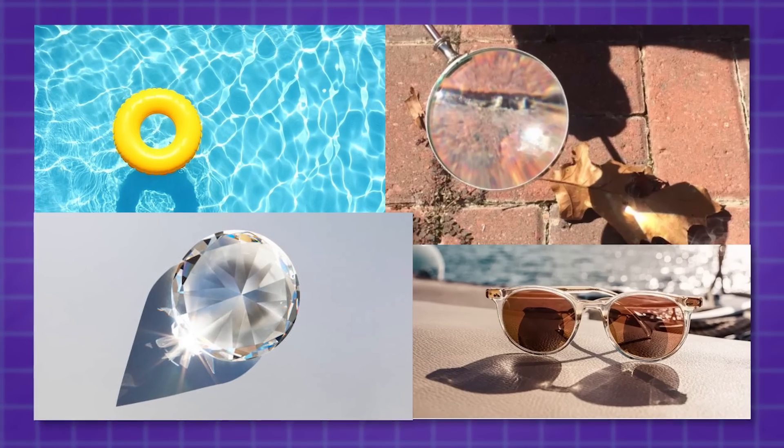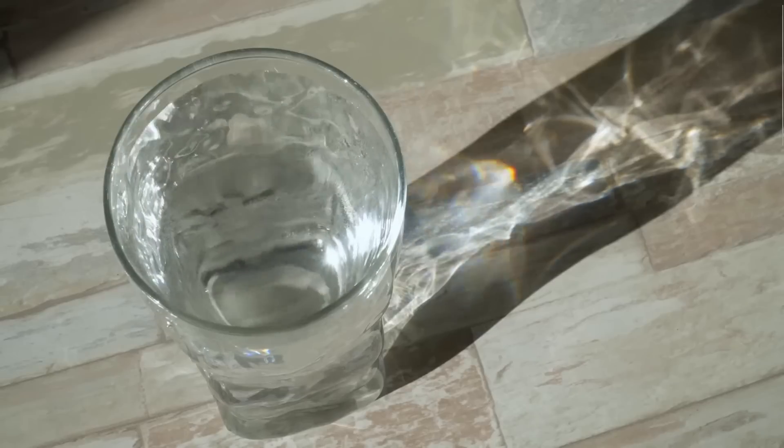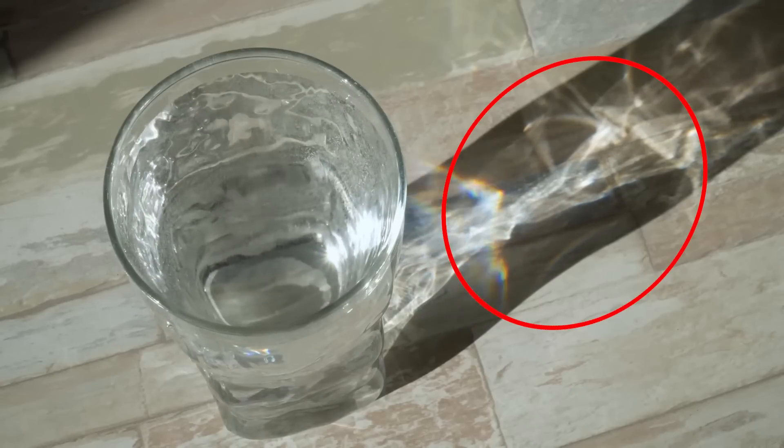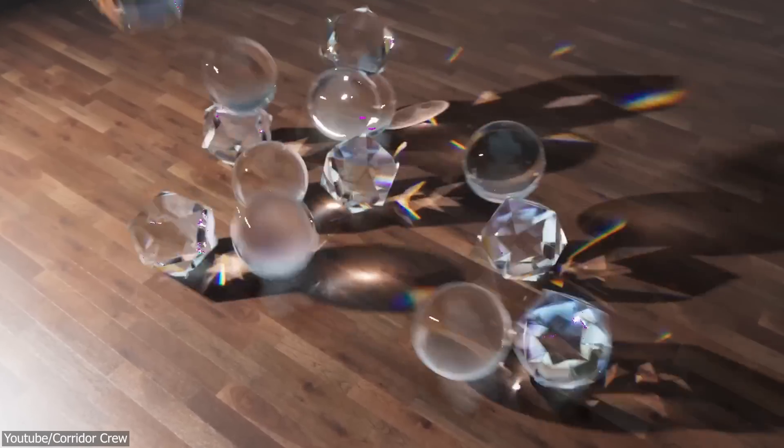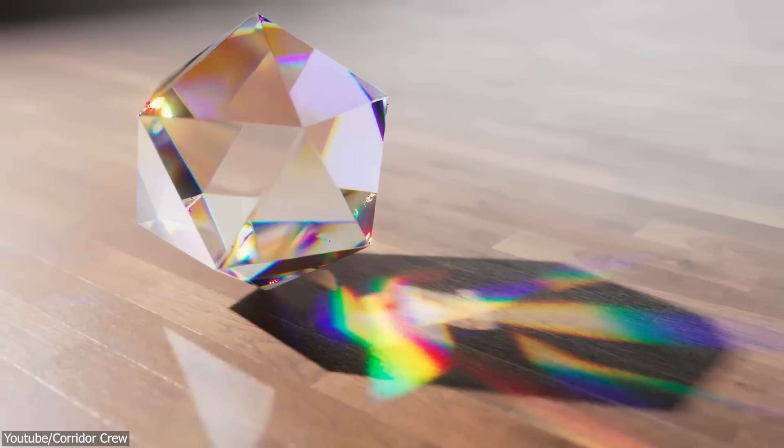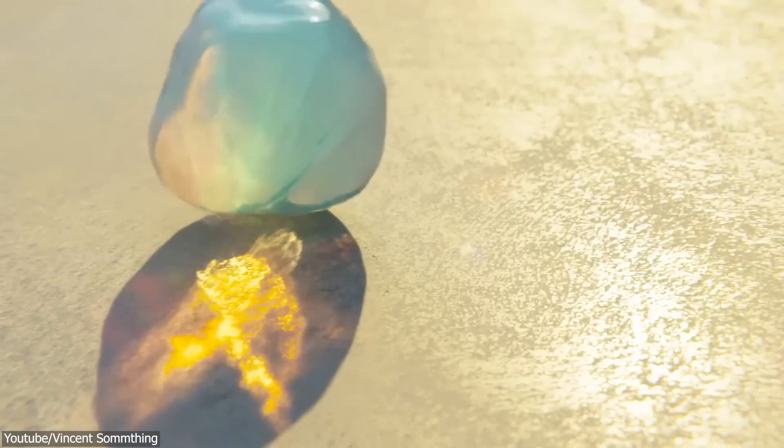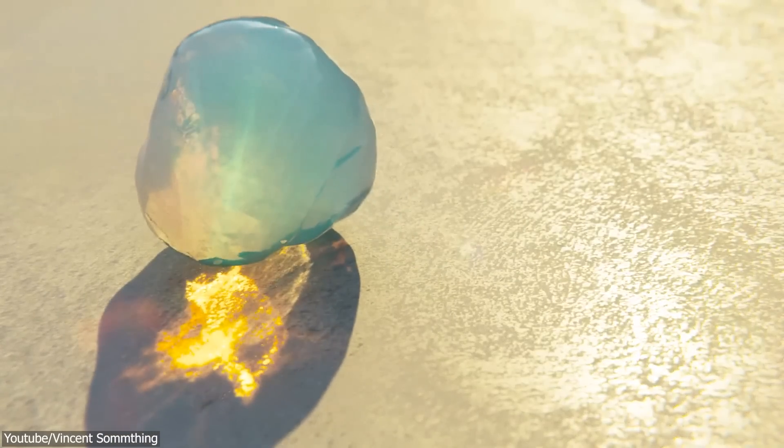They are commonly seen in real-world situations, such as when light passes through a glass of water and creates shimmering patterns on the surface. In computer graphics, caustics play a crucial role in achieving a realistic render of transparent or refractive objects, like glass, water, or diamonds.